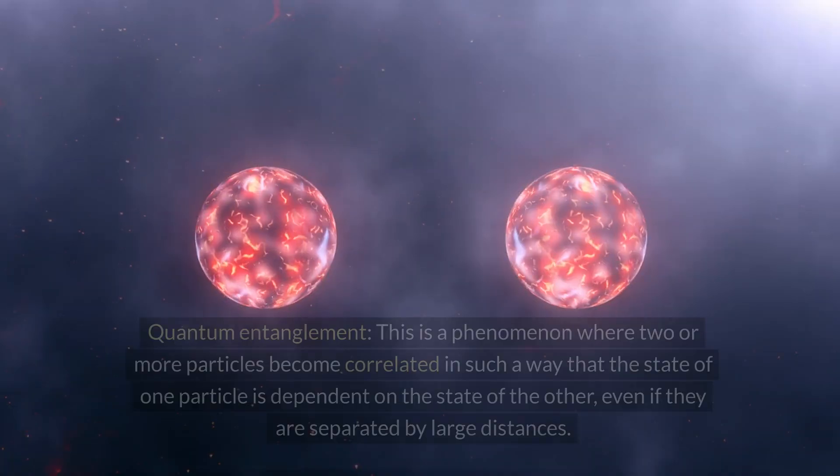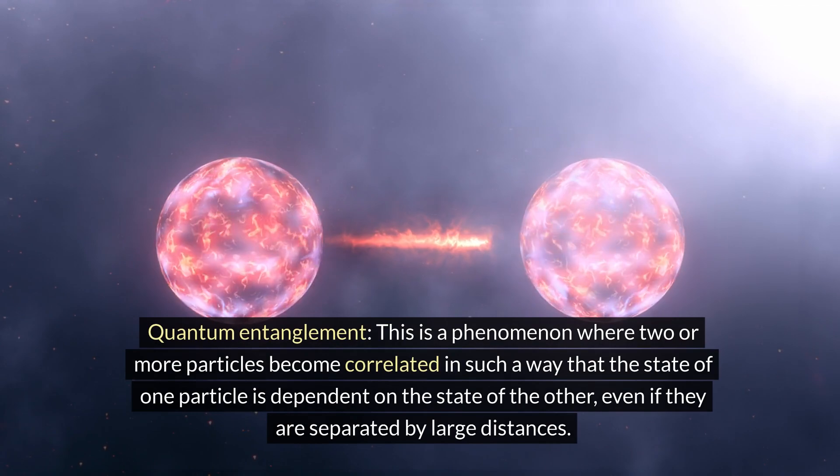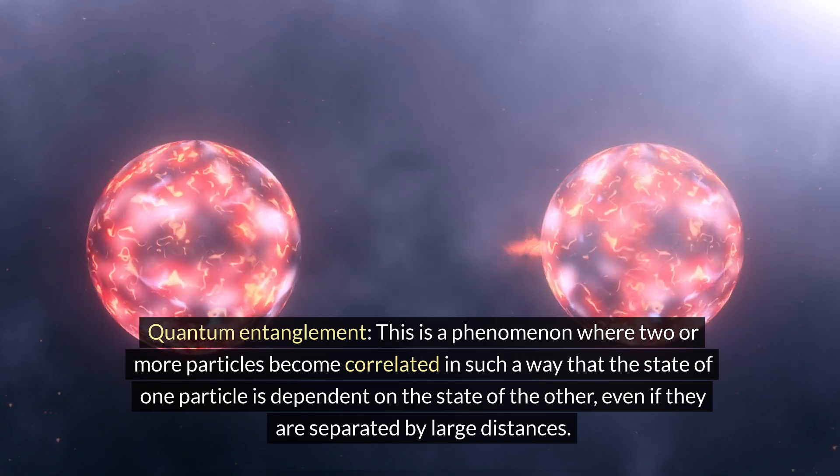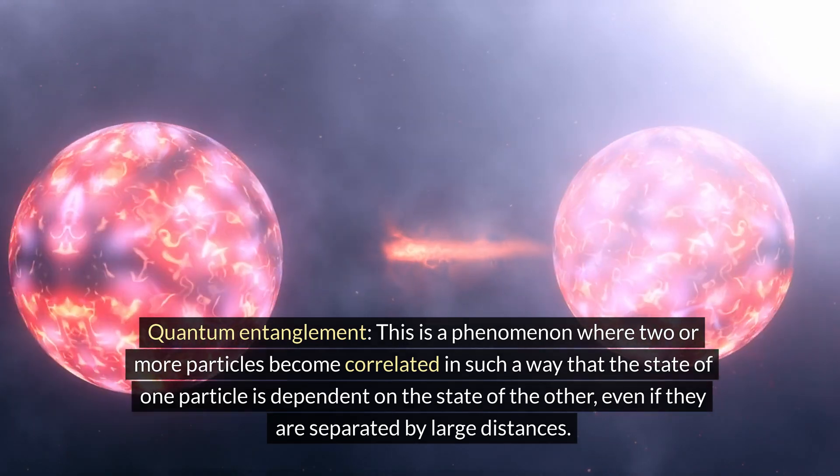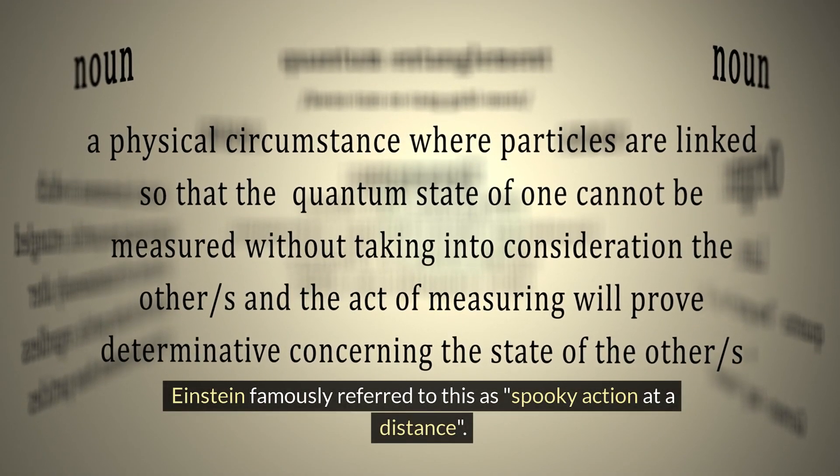Quantum entanglement. This is a phenomenon where two or more particles become correlated in such a way that the state of one particle is dependent on the state of the other, even if they are separated by large distances.